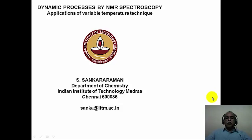Hello, this is module 14 of the course on application of spectroscopic methods in molecular structure determination. In the earlier module, we were discussing the study of dynamic processes by variable temperature NMR spectroscopy and saw several examples of restricted rotation, conformational changes and so on. We will continue along the same lines in this module and look at some aggregation phenomena, molecular rearrangements, and examples from organometallic chemistry.